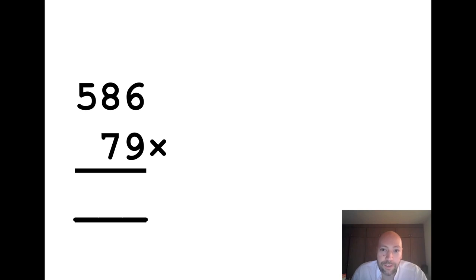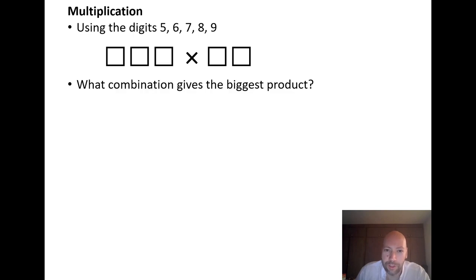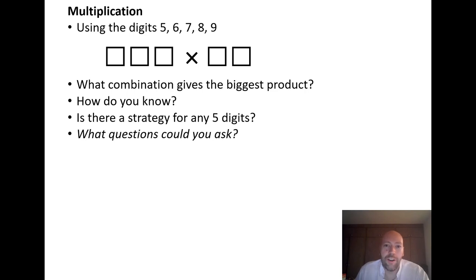Compare this with the following task. You might have noticed that the calculation uses the digits five, six, seven, eight, nine. If you rearrange these into a three digit by two digit multiplication, what combination gives the biggest product? How do you know? Is there a strategy for any five digits? Pause the video. Try and notice what happens for you as you work on this task. What other questions could you ask?